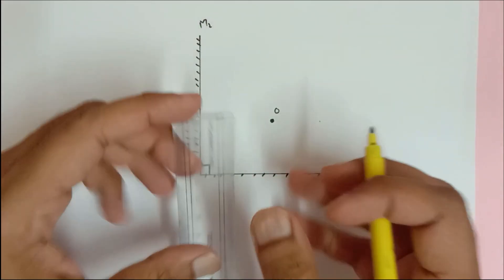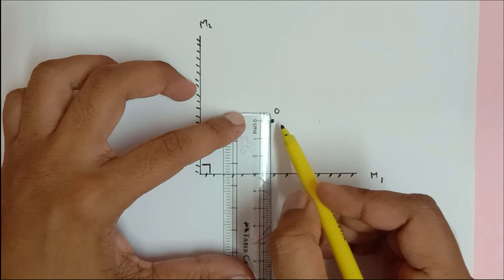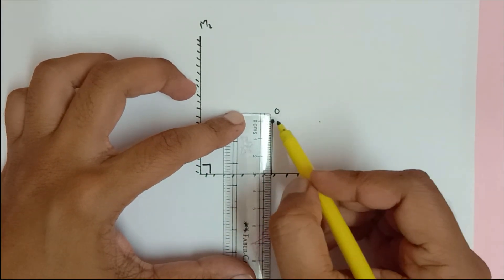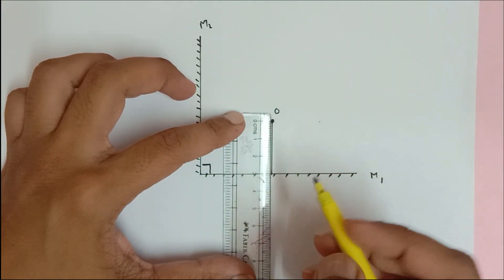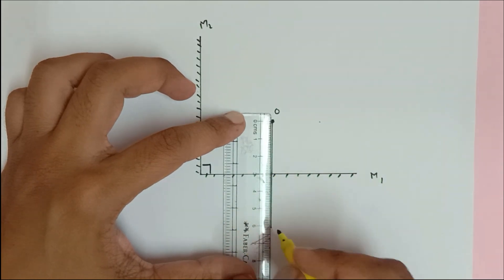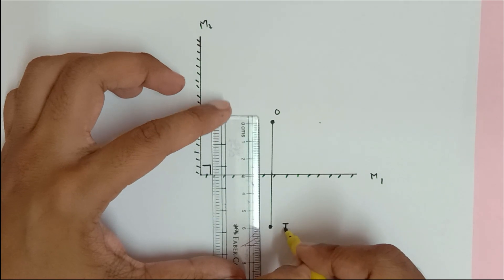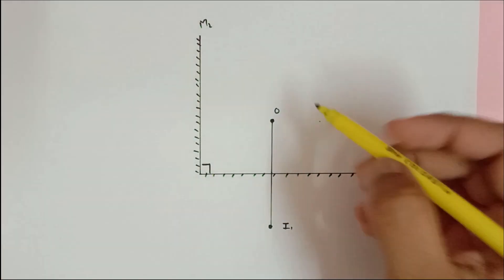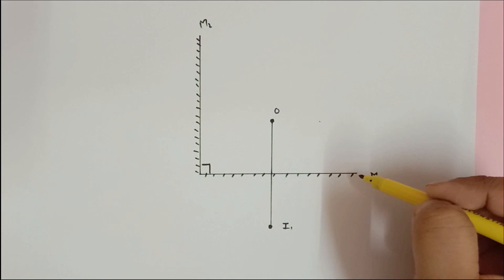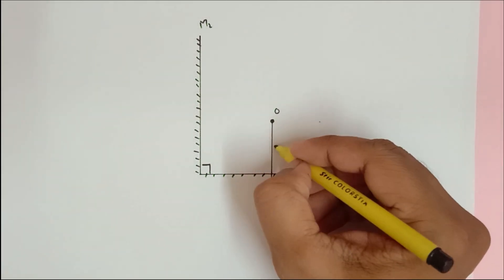Here we are going to use simple concepts. If I drop a perpendicular line, the object distance is 3 centimeters, so 3 centimeters exactly behind the mirror I am going to get the image, and I will call this image I1. So the object behaves as the source for mirror M1 and the image is formed 3 centimeters behind.